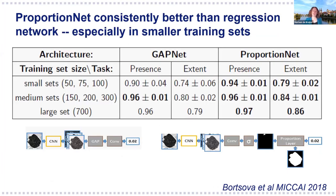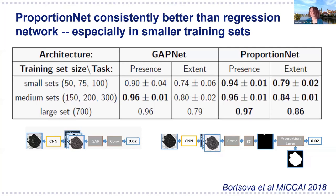The main advantage of this technique is that it provides a segmentation—just training on visual scores, we can also localize the disease. We also found it performs better than a regular regression network that is optimized to predict the correct visual score without knowing that the label corresponds to a certain proportion of a volume. The difference is especially pronounced with small training sets. Knowing what the label really means—that it corresponds to a certain proportion of the image being affected—helps regularize the problem and gives better results.